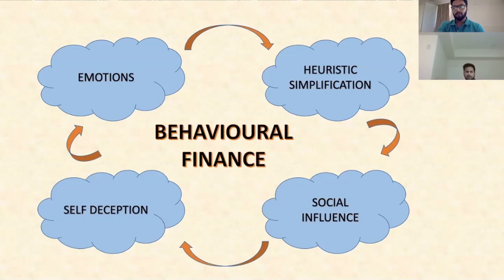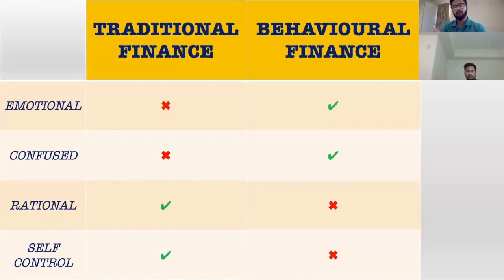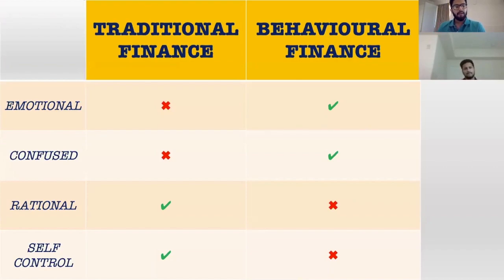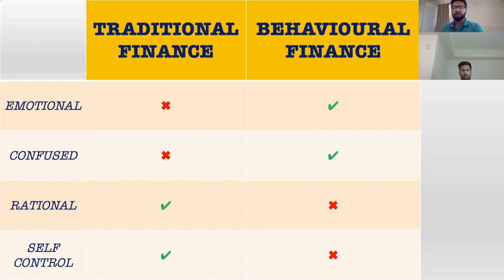Before I hand it over to Devang, I'd like you to look at this table comparing traditional finance versus behavioral finance. In behavioral finance, people are emotionally driven, more confused, and not very rational — irrational to an extent. Lastly, they lack self-control, so they are impulsive in their financial decision making. This is pretty much the crux of what behavioral finance is.